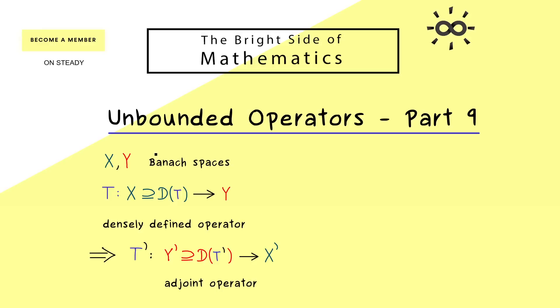So this is what we can do in a Banach space, but you might remember, special Banach spaces are so-called Hilbert spaces. So let's put this on the right-hand side, the special case that our Banach spaces are also Hilbert spaces. Then the notion of a densely defined operator does not change at all, but we can have a different approach for an adjoint operator.